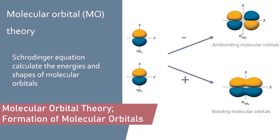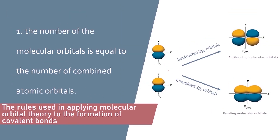Electrons in atoms are found in atomic orbitals, and we can use the Schrödinger equation to calculate the shape of atomic orbitals. But what about molecules? Similar to atomic orbitals, electrons in molecules are found in molecular orbitals, and we can use the Schrödinger equation to calculate the energies and shapes of molecular orbitals. There are rules used in applying molecular orbital theory to the formation of covalent bonds.